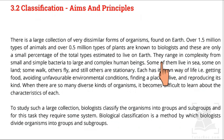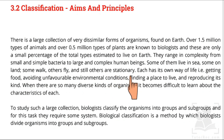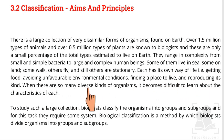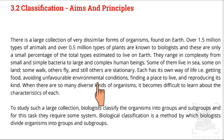Some of them live in the sea, some on land, some walk, others fly, and still others are stationary. Each has its own way of life — getting food, avoiding unfavorable conditions, finding a place to live, and reproducing its kind. Every animal or plant has its own food source and its own survival strategies under unfavorable environmental conditions.